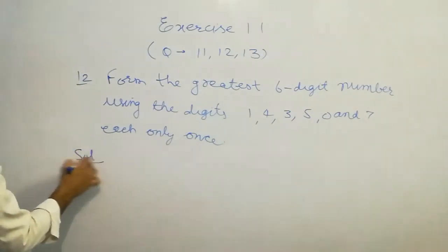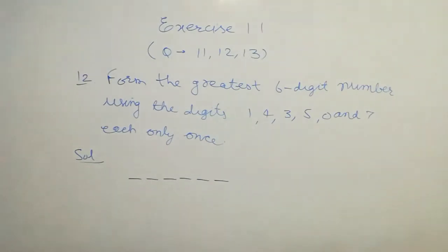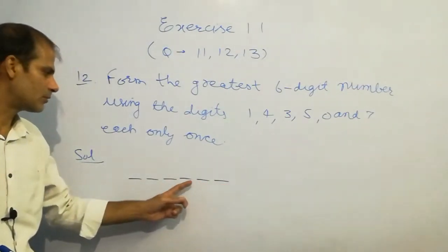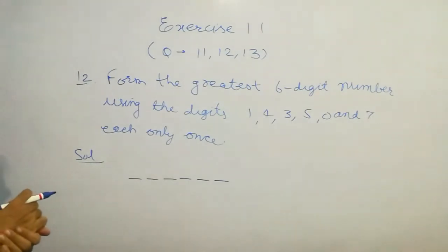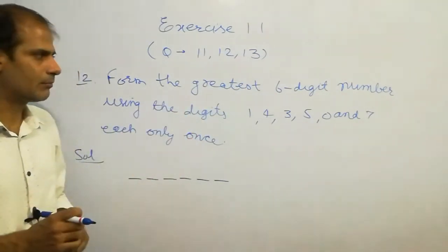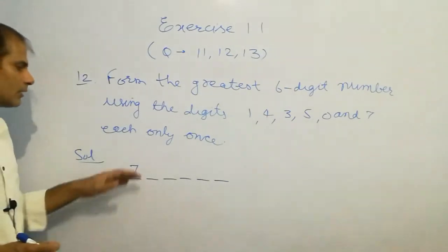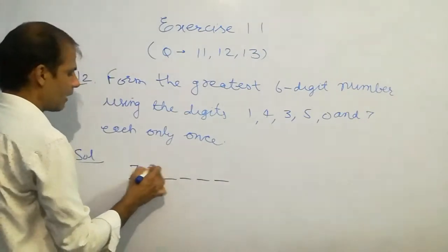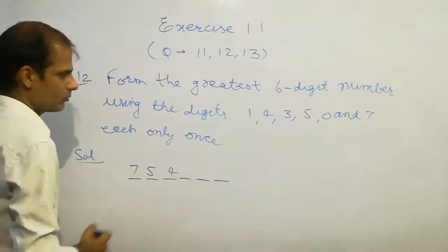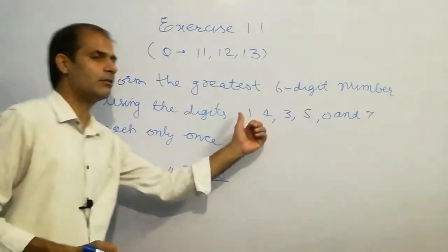You have to make a 6-digit number, so reserve the places — these are the 6 places. The highest place value position will be the leading digit. To form the greatest number, there is a particular method: start with the greatest digit, which is 7, then write the digits in descending order. The next digit smaller than 7 is 5, then 4, then 3, then 1, and finally 0.